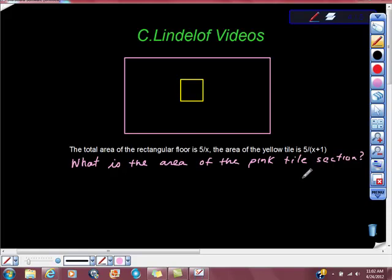So here's a question. I just want to make sure we ace this. It says the total area of the rectangular floor is 5/x. The area of the yellow tile is 5/(x+1). What is the area of the pink tile section?